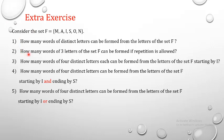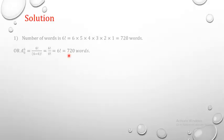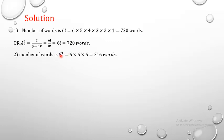Second question: how many words of 3 letters from set F can be formed if repetition is allowed? This is an arrangement with repetition since repetition is allowed and we want 3-letter words. The answer is 6³ = 6 × 6 × 6 = 216 words.